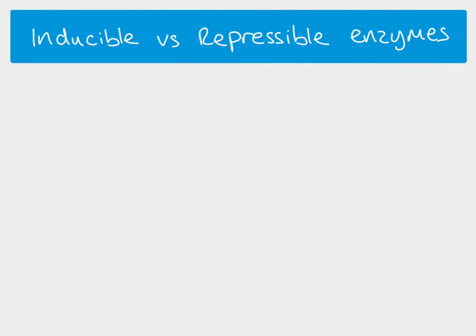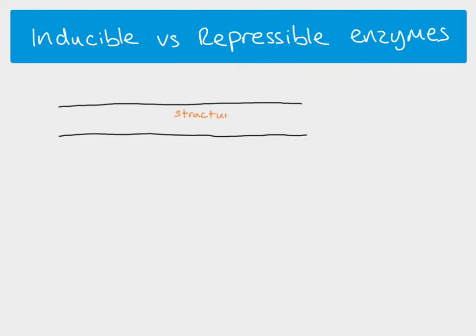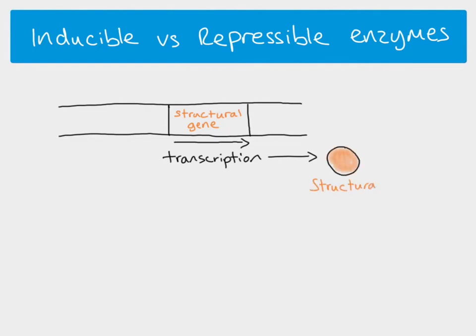Now we need to look at two different kinds of enzymes. Remember, enzymes can be the product of the transcription process — if we take a length of DNA containing a structural gene, transcription of that structural gene will eventually result in a structural protein. We're specifically looking here at structural proteins which are enzymes, so here's our enzyme with its active site.